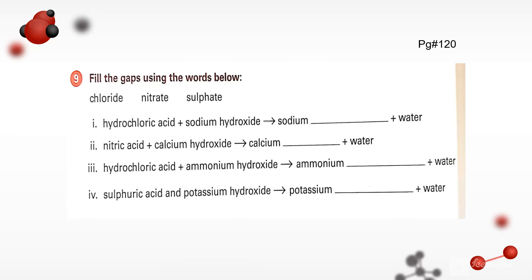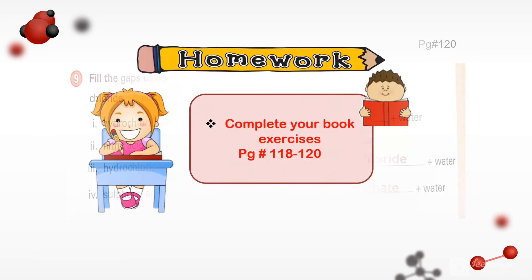Come towards the ninth question. Fill in the gaps using the words below: chloride, nitrate, and sulfate. So hydrochloric acid plus sodium hydroxide gives us sodium chloride plus water. Nitric acid plus calcium hydroxide gives us calcium nitrate plus water. Hydrochloric acid plus ammonium hydroxide gives ammonium chloride plus water. And sulfuric acid plus potassium hydroxide gives potassium sulfate plus water. Thank you so very much. This is all about our today's lecture.